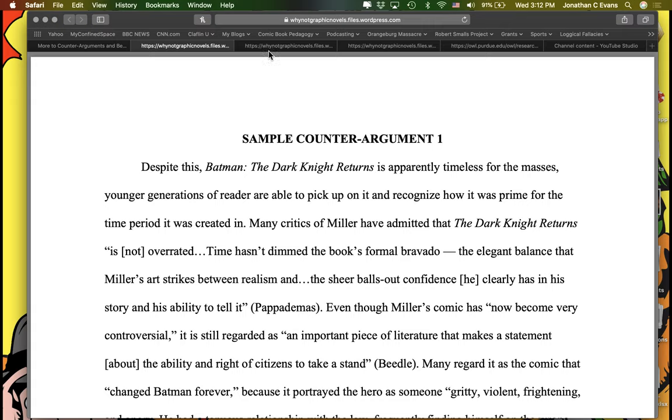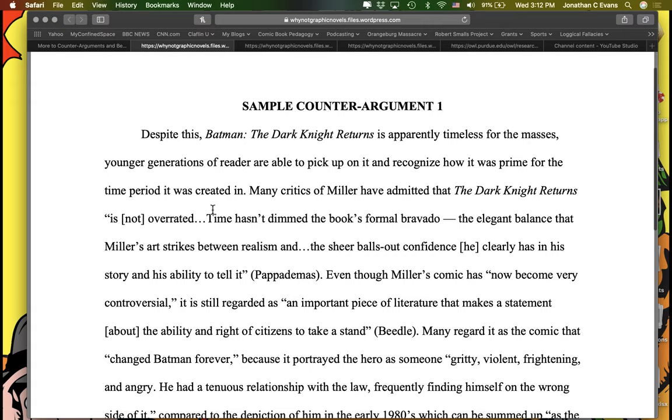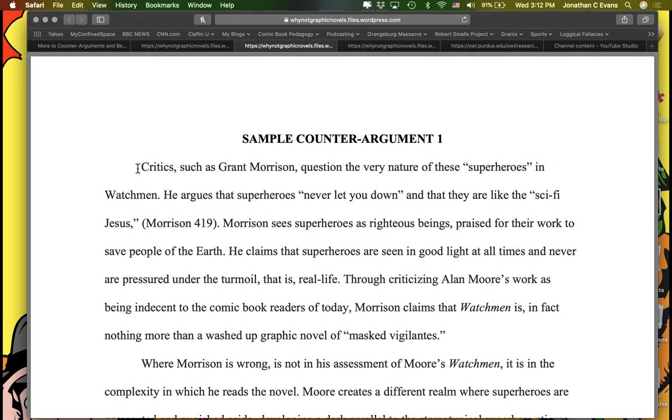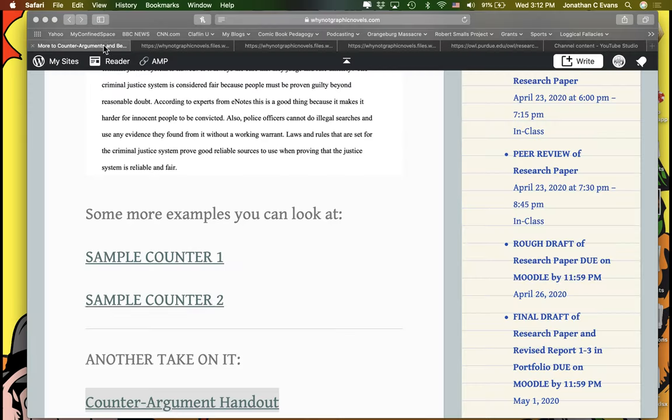Now, in addition to this example, I've got two more lengthy ones that I've attached here. This one here, I would say that their opening line is a little flawed here. This line right here would not be what I would consider a good transition. This one right here is much better. And it opens with many critics of Miller have admitted that Dark Knight returned and they actually even quote somebody right off the bat. That is a much stronger sentence and would have been a better starting point. This is a better example. Critics such as Grant Morrison question the nature of these superheroes in Watchmen. A little fuzzy but better. The idea here is you need to make sure you have a clear transition.